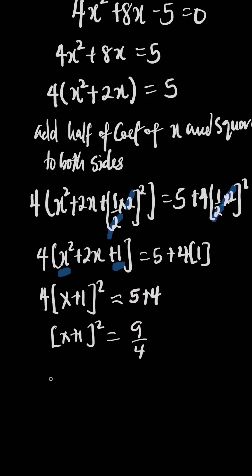Now, squaring both sides, we are going to have x + 1 = √(9/4). We have x + 1 = ±3/2. Then, my x is going to be -1 + 3/2 or -1 - 3/2.